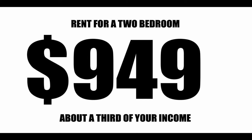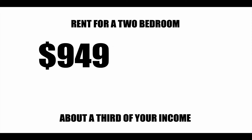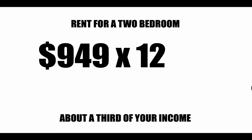This number is $949 per month, so let's find what it would be per year. We take $949 and multiply it by 12 — that gets you the total cost over 12 months in a year. That's only a third of your total income under this assumption, so we find the total income by taking that third and tripling it to get the whole.